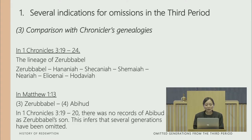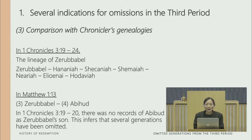Next, we compare it with the genealogies recorded in Chronicles. In 1 Chronicles chapter 3, verses 19 to 24, we can see the lineage of Zerubbabel: Zerubbabel, Hananiah, Shekaniah, Shemaiah, Neariah, Elioenai, and Hodaviah. But in Matthew chapter 1, verse 13, Abihuod is recorded right after Zerubbabel as his descendant. Comparing it with the records in Chronicles, there is no record of Abihuod being Zerubbabel's son, which infers that several generations between them have been omitted.